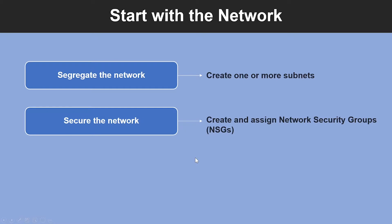Another step is to secure the network. By default, there is no security boundary between subnets, so services in each of the subnets can talk to one another. However, you can set up Network Security Groups, which allows you to control the traffic flow to and from subnets and to and from VMs. NSGs act as your software firewalls, applying custom rules to each inbound and outbound request at the network interface and subnet level.